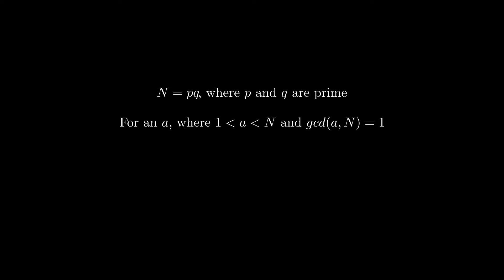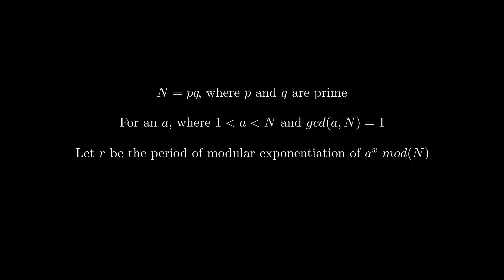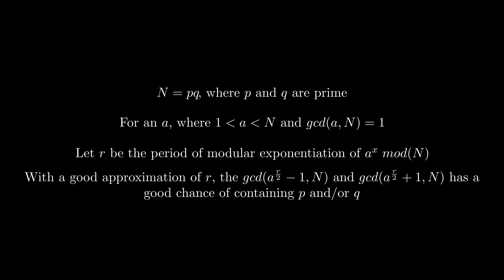and we find the period of a to the x mod N, then, if we get a good approximation for r, the gcd of a to the power of r divided by 2 minus 1 and N, and the gcd of a to the power of N divided by 2 plus 1 and N, has a good chance of containing the factors of N.